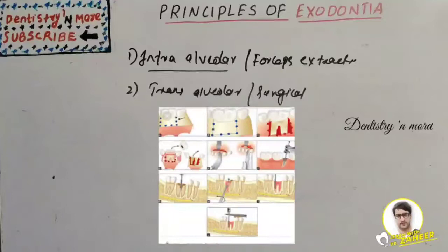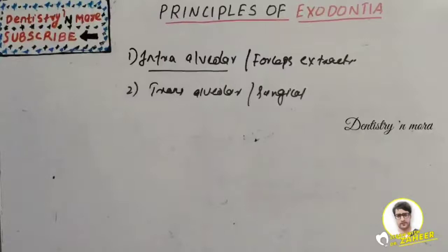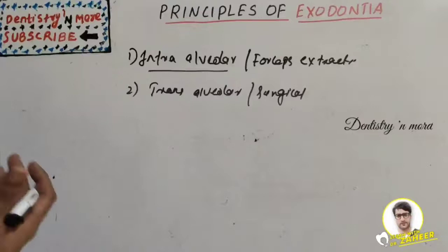What are the indications of intra-alveolar extraction? These include severe caries, severe periodontal disease, failure of endodontic treatment, orthodontic purpose, prosthodontic purpose, teeth from fracture line, or economical failure to preserve the tooth. All these conditions indicate tooth extraction.